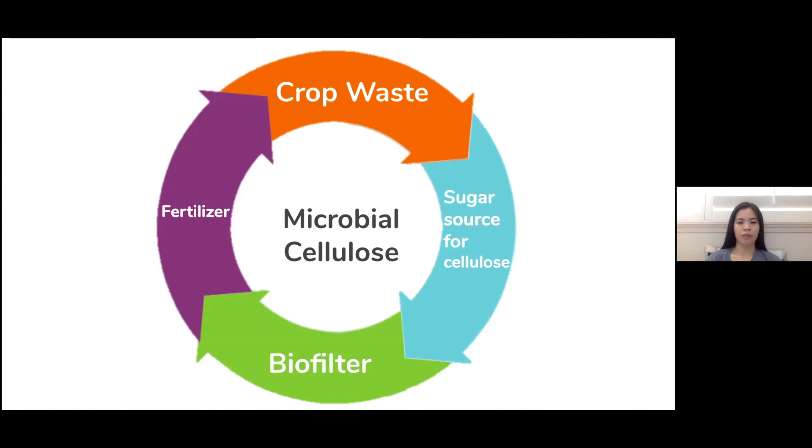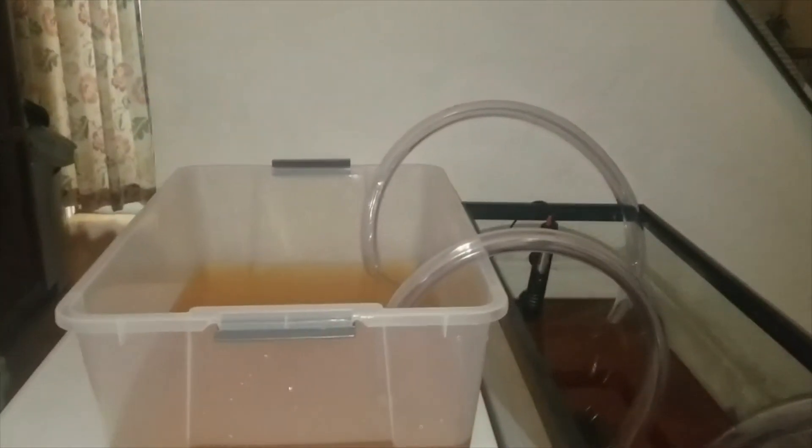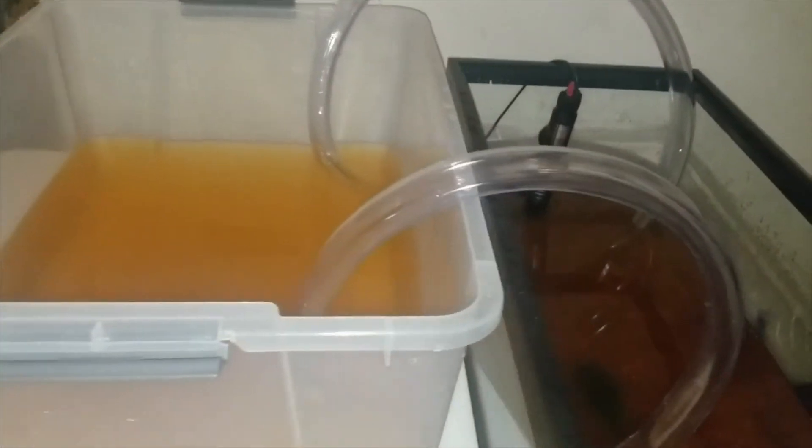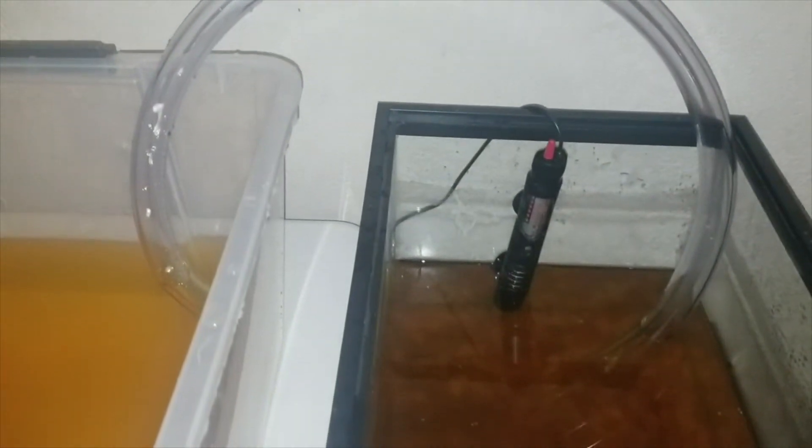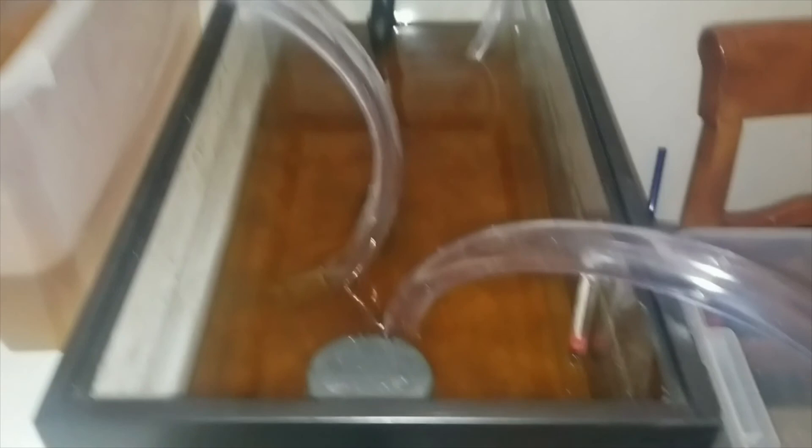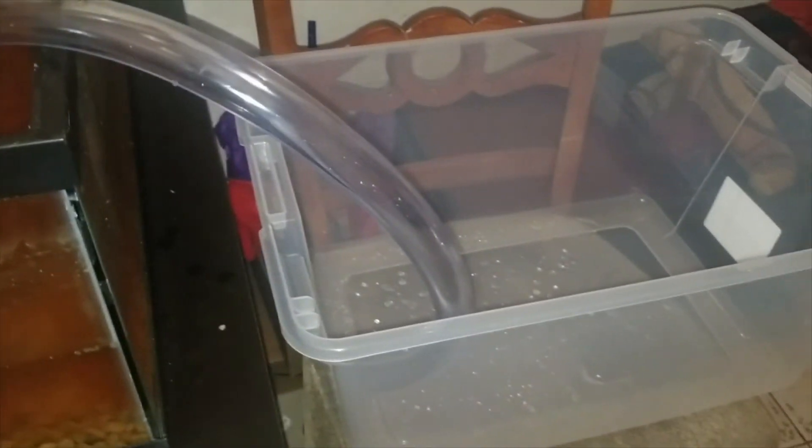Now, Sugon is going to show us how these parts have integrated into creating our prototype. This prototype represents three main parts in the bioreactor. The tub on the left is the ground water tank, the fish tank is the microbial cellulose chamber, and the tub on the right is the clean water tank. This prototype helped visualize the full-scale model.